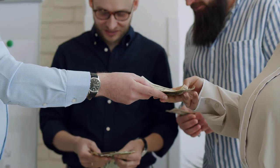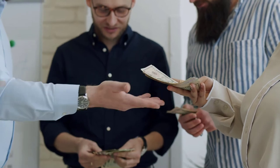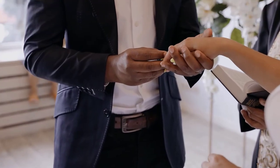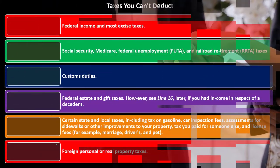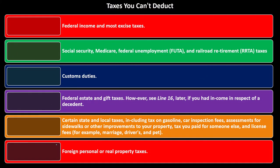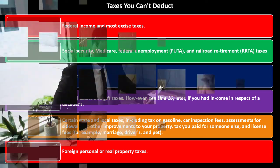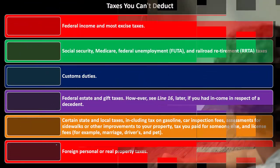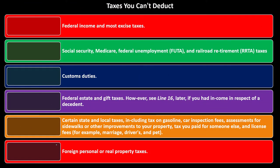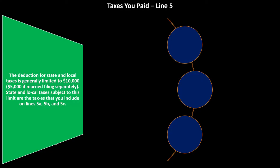License fees — for example, marriage or driver's license fees — are not deductible. Foreign personal or real estate taxes are in this category too. When talking about foreign taxes, we're discussing whether they can possibly be deducted on Schedule A. Remember, we're specifically looking at state and local taxes and the deduction for state and local taxes.